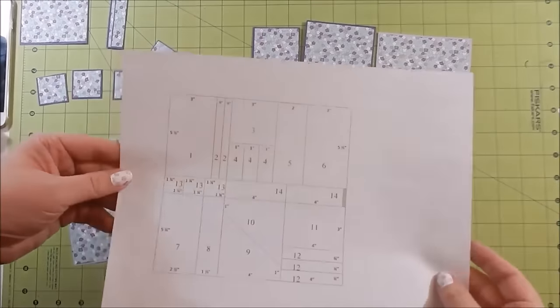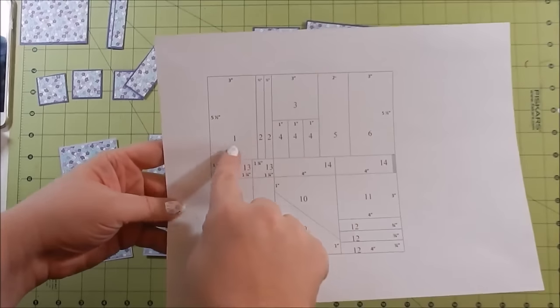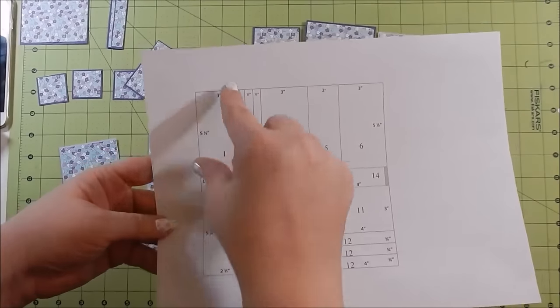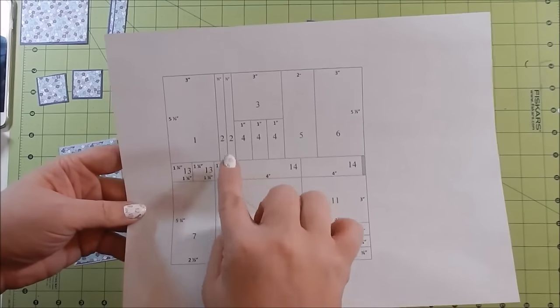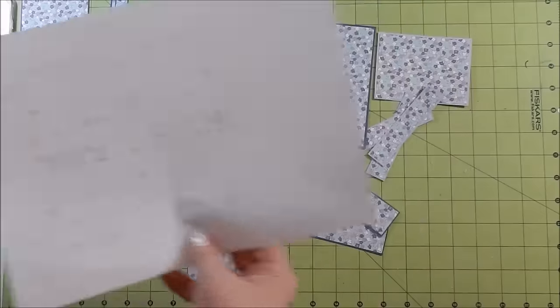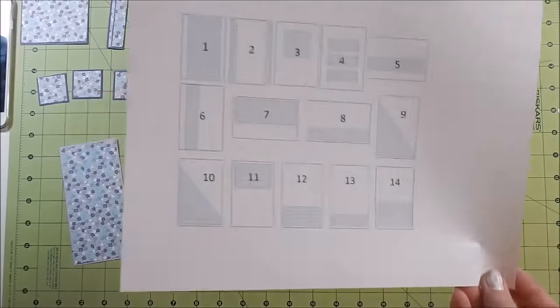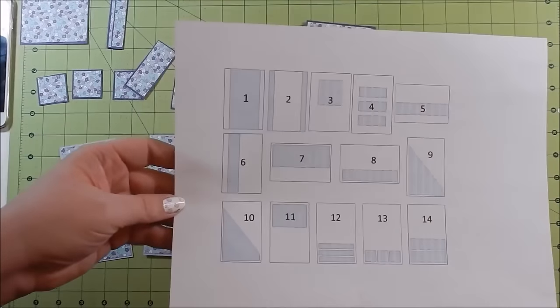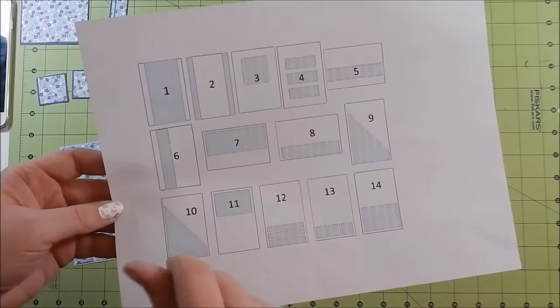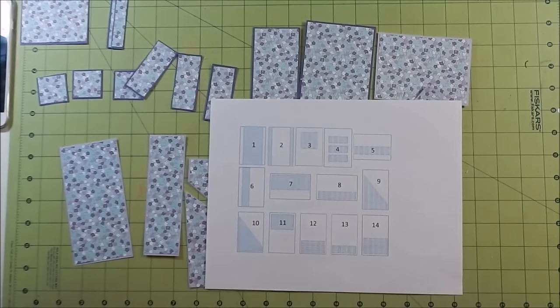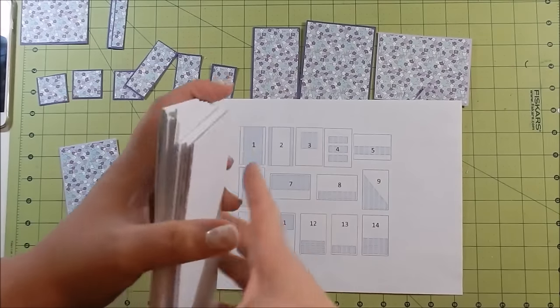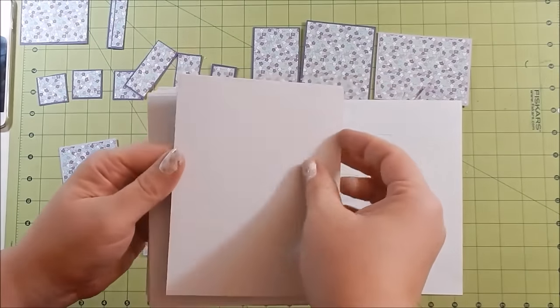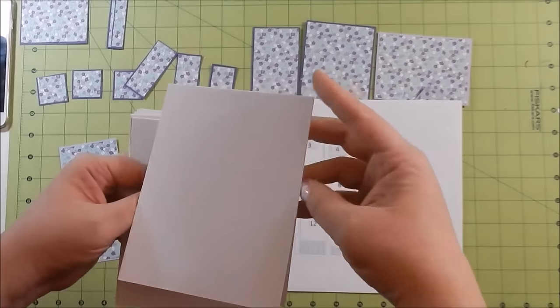And then in my sheet with measurements, it gives the measurements obviously, but it also gives what this piece goes with. This is for card one, these two strips are for card two, the squares for card three, etc. And then the next sheet is your card layout.